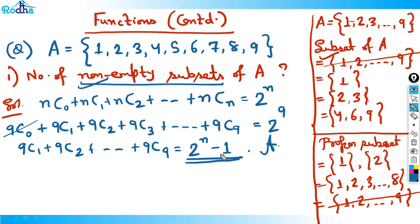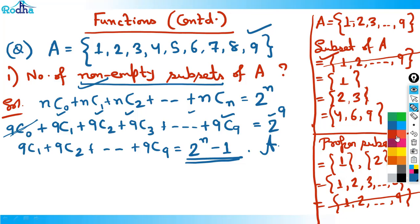So the number of non-empty subsets of A is 2^9 minus 1. We eliminated the case of zero elements — that is, 9C0 — and the answer is 2 raised to 9 minus 1.